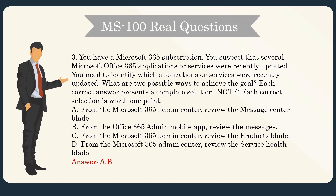Question 3. You have a Microsoft 365 subscription. You suspect that several Microsoft Office 365 applications or services were recently updated. You need to identify which applications or services were recently updated. What are two possible ways to achieve the goal? Each correct answer presents a complete solution. A. From the Microsoft 365 Admin Center, review the Message Center blade. B. From the Office 365 Admin Mobile App, review the messages. C. From the Microsoft 365 Admin Center, review the Products blade. D. From the Microsoft 365 Admin Center, review the Service Health blade. Answer: A, B.